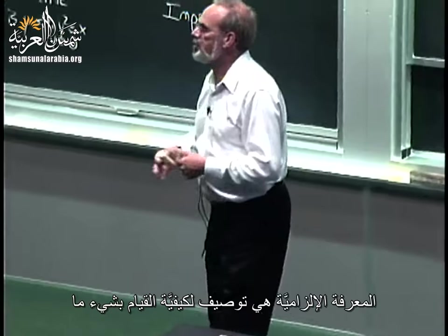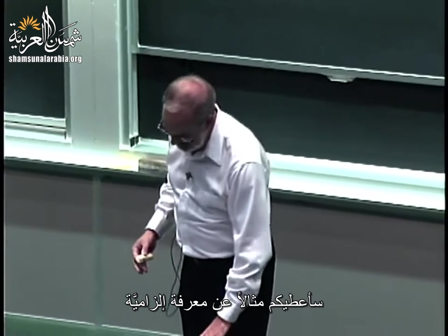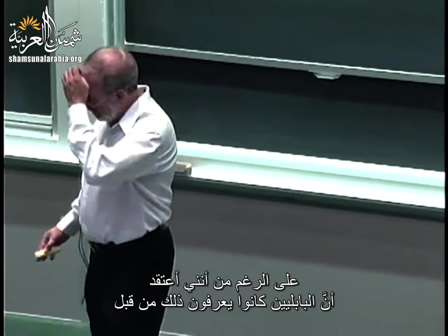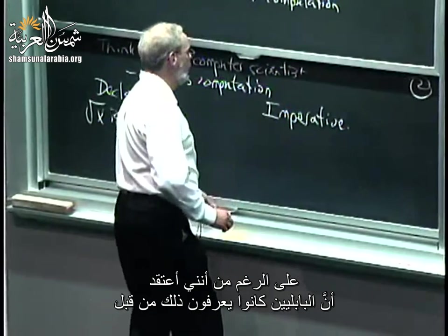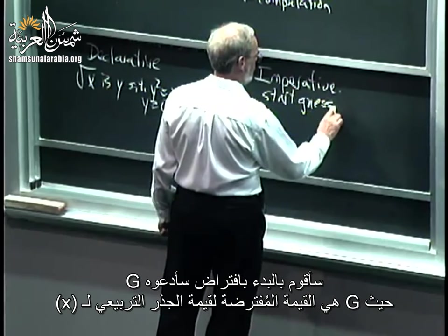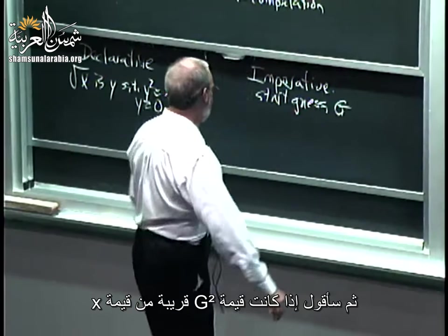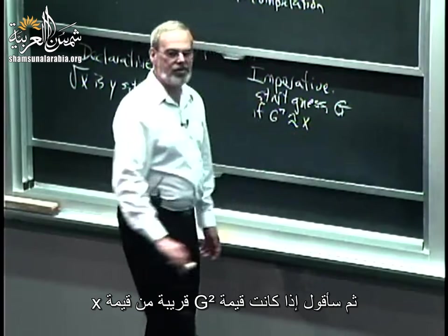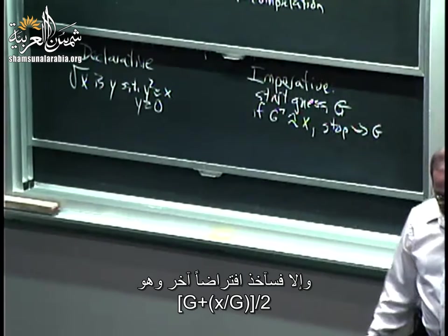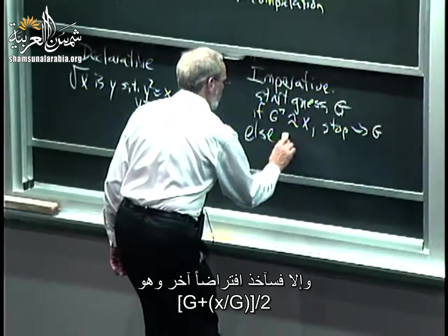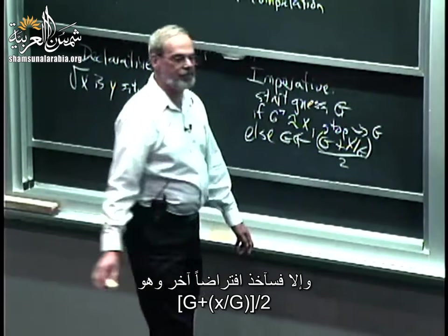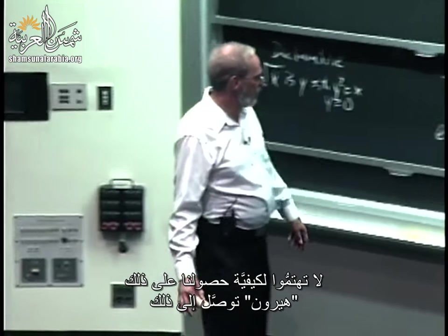Here is a piece of imperative knowledge for computing square roots — it's attributed to Heron of Alexandria, though the Babylonians are suspected of knowing it beforehand. Start with a guess g. If g squared is close enough to x, stop and return g — it's a good enough answer. Otherwise, get a new guess by taking the average of g and x/g, then repeat.